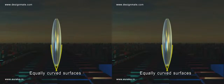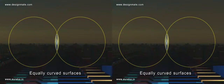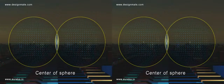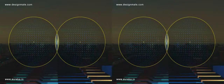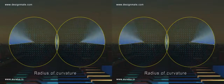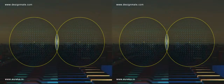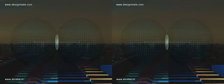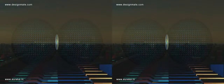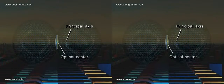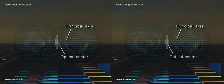We can consider the equally curved surfaces of a lens to be a small part of spheres. The center of the sphere is called the center of curvature of the lens, and the radius of the sphere is known as the radius of curvature. The line joining the centers of curvature on both sides of the lens is known as the principal axis, which passes through the optical center of the lens.